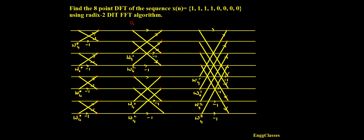First, what we have to do is construct and draw the 8-point DIT FFT signal flow graph. This is how the flow graph looks like. I hope all are familiar with the signal flow graph. Once we have drawn this signal flow graph, we need to find the DFT of the sequence.